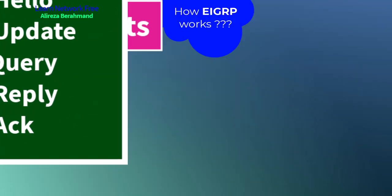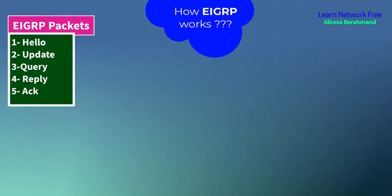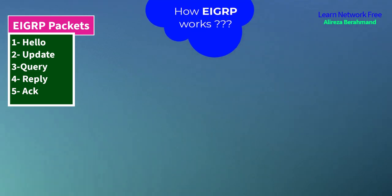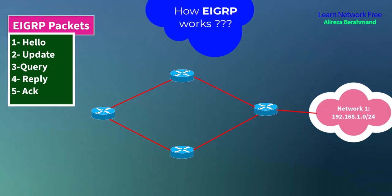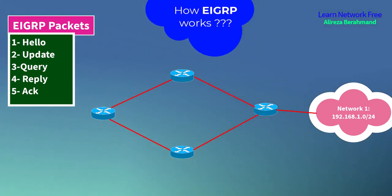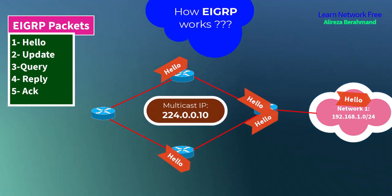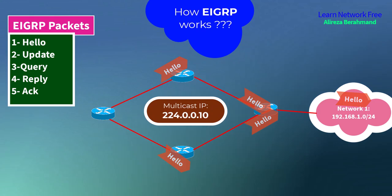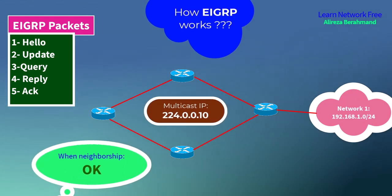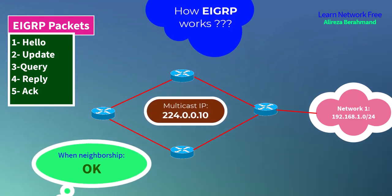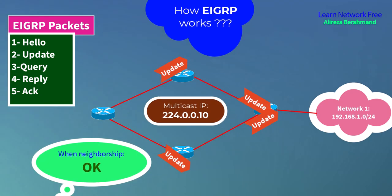EIGRP has five different types of packets for communication: hello, update, query, reply, and acknowledge. When routers are connected, they configure IP on interfaces and start sending hello packets by multicast IP 224.0.0.10 for adjacency discovery to establish neighborship. After neighborship is established, routers start sending update packets by unicast to specific destinations.